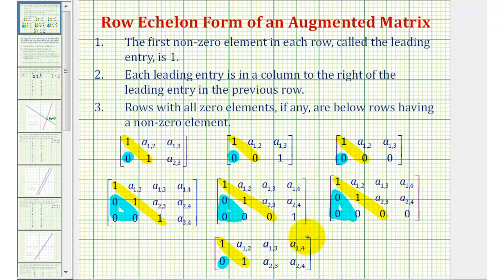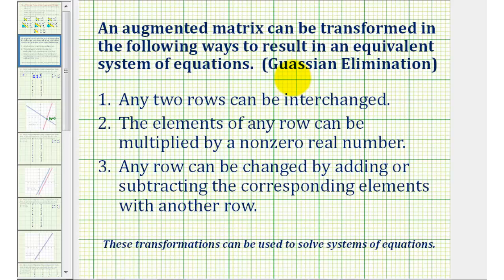The way we obtain this form of an augmented matrix is using a process called Gaussian elimination, which means any two rows can be interchanged, the elements of any row can be multiplied by a nonzero real number, and any row can be changed by adding or subtracting the corresponding elements with another row.